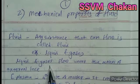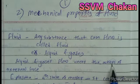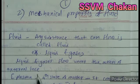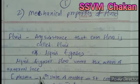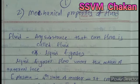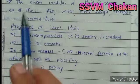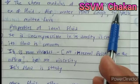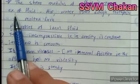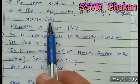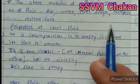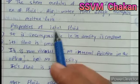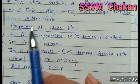Liquid and gases flow under the action of an external force. Generally they flow under the action of gravitational force. The shear modulus of a fluid is zero. Examples of fluid are air, water, toothpaste, molten lava, milk, oil, edible oil, etc.